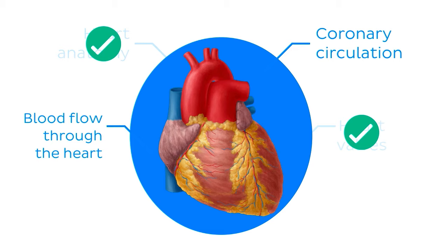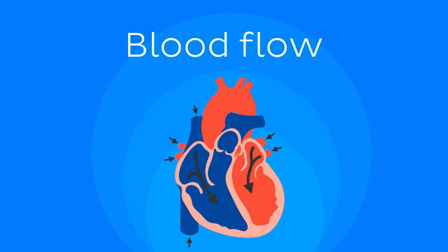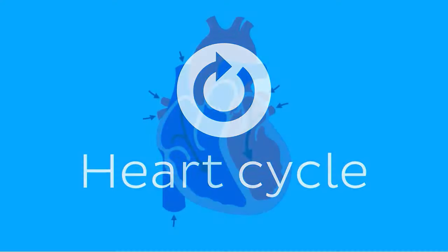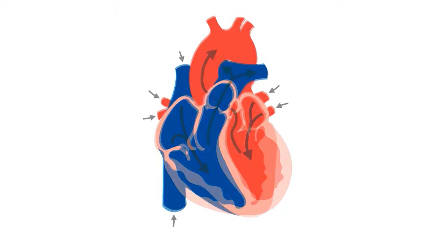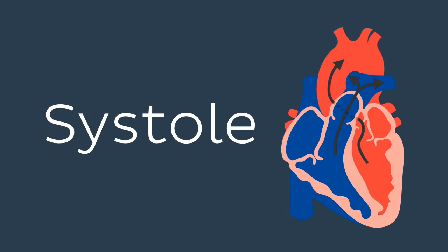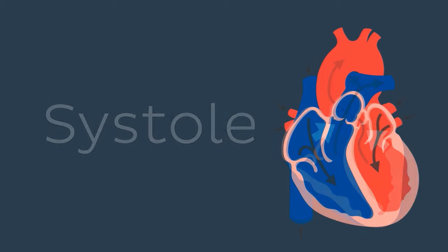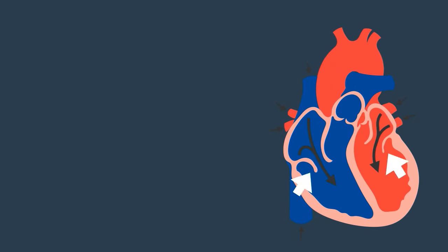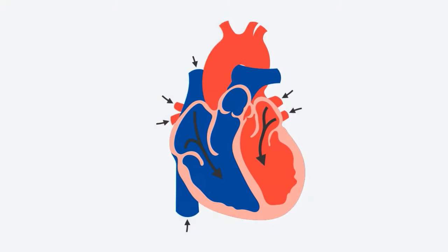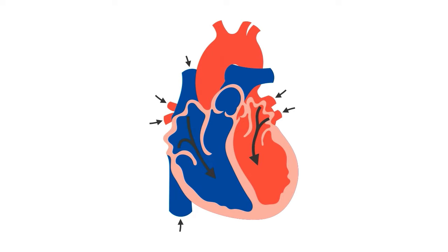Now that we have looked at the anatomy of the heart, let's take a practical look at how blood flows through the heart. Blood flow through the heart is quite logical — it happens in tandem with the heart cycle, which consists of the periodical contraction and relaxation of the muscular walls of the atrial and ventricular myocardium. Two important terms to know are systole, the period of contraction of the ventricular walls and opening of the semilunar valves, and diastole, the period of ventricular relaxation and opening of the atrioventricular valves. Note that whenever the atria contract, the ventricles are relaxed, and vice versa.